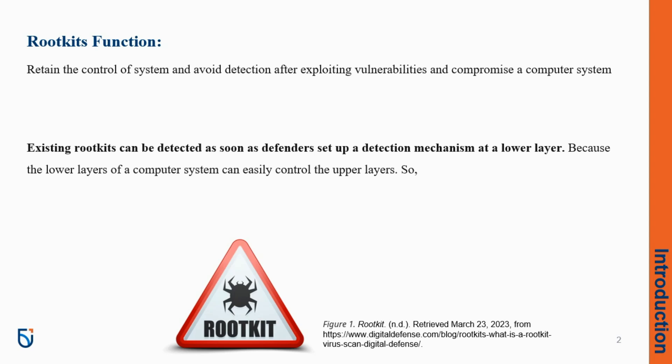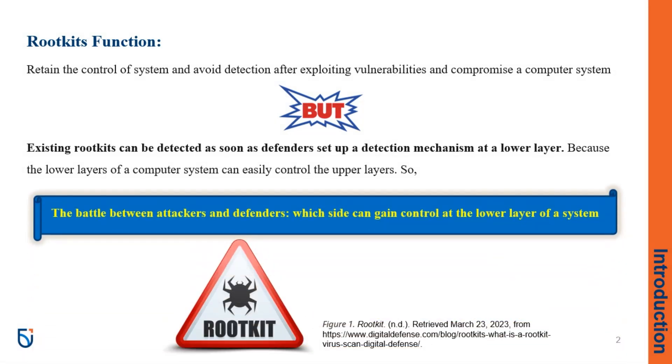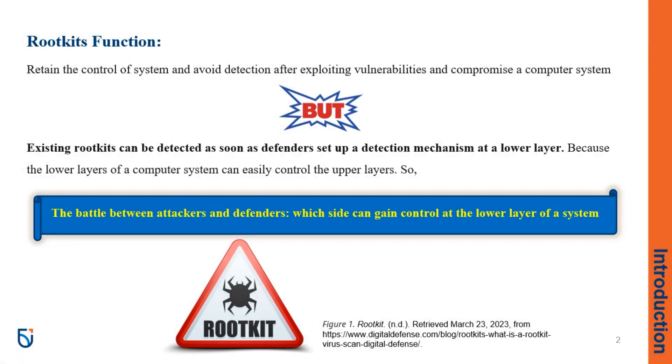The most important step after exploiting vulnerabilities and compromising a computer system is to retain control of the system and avoid detection. To achieve this goal, there are various rootkits. But existing rootkits can be detected as soon as defenders set up a detection mechanism at a lower layer, because the lower layers of a computer system can easily control the upper layers. So, the battle between attackers and defenders is: which side can gain control at the lower layer of a system?